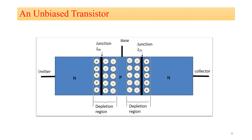Now, an unbiased transistor. What is biasing? If you are applying some external power supply to the electronic device, then that device is in a biasing condition. If you are not applying any external power supply, then the device is in unbiased condition. The picture shows the NPN transistor in unbiased condition — no external power supply is applied. In the construction, N-type and P-type semiconductor materials are used.